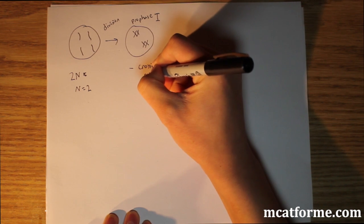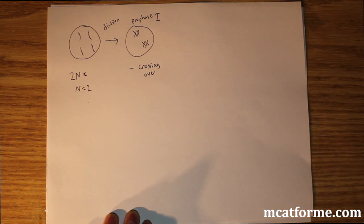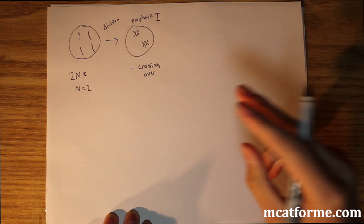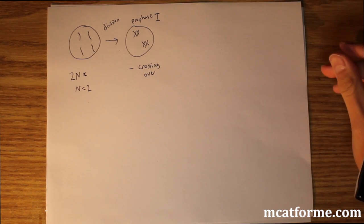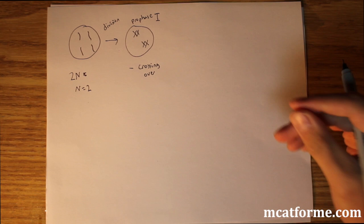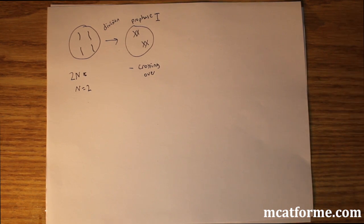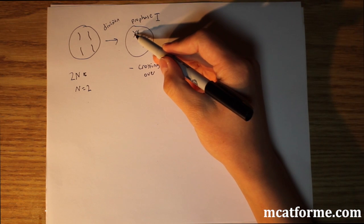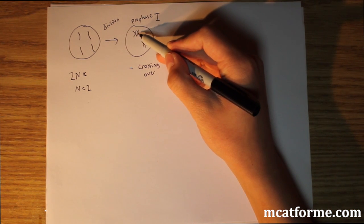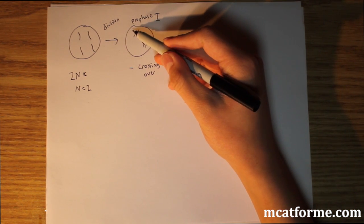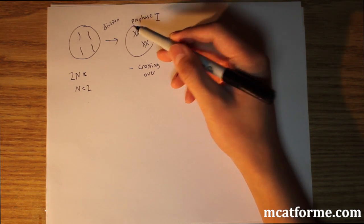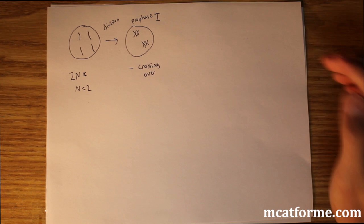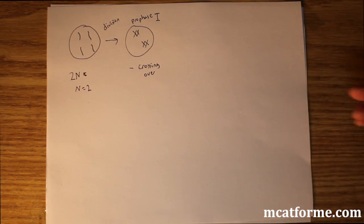One mistake people make is thinking that crossing over involves sister chromatids. But it's actually crossing over of homologous chromosomes. These are homologous chromosomes, and it's the crossing over of them. If it were sister chromatids, that would be crossing over within the same chromosome, and that's not what happens. Crossing over of homologous chromosomes is what we see.